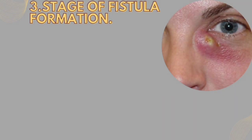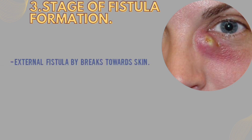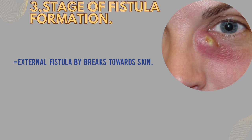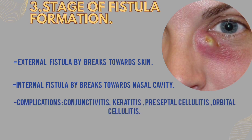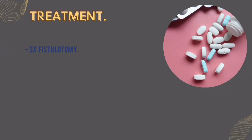If the second stage is not treated, this will lead to the stage of fistula formation. In this stage, there will be an external fistula breaking towards the skin, or an internal fistula breaking towards the nasal cavity. If we don't treat at this stage, there will be complications like conjunctivitis, keratitis, preseptal cellulitis, orbital cellulitis, etc. Treatment includes fistulectomy, that is the surgical removal of the fistula tract, followed by DCR or DCT surgery.